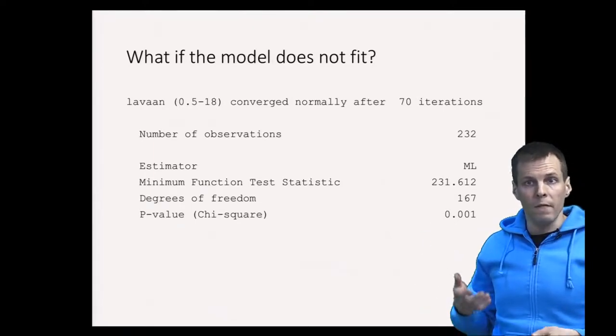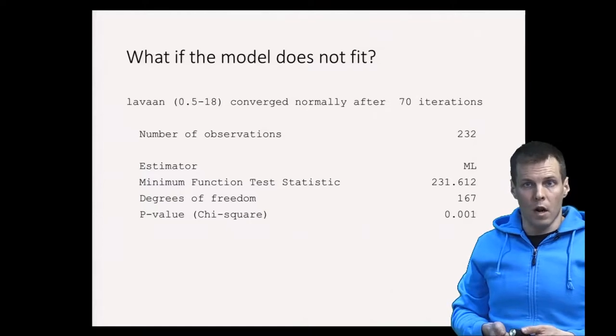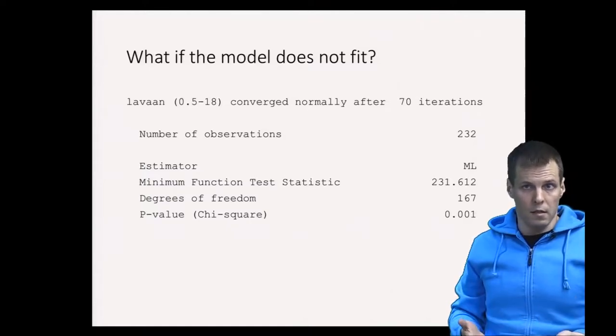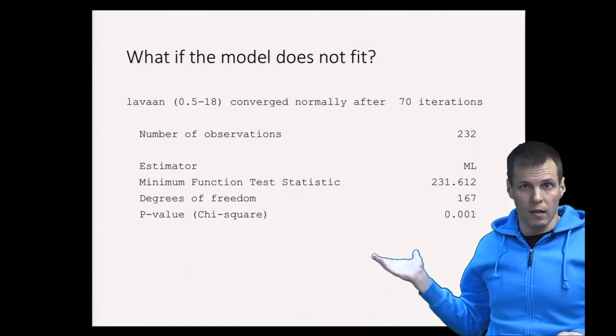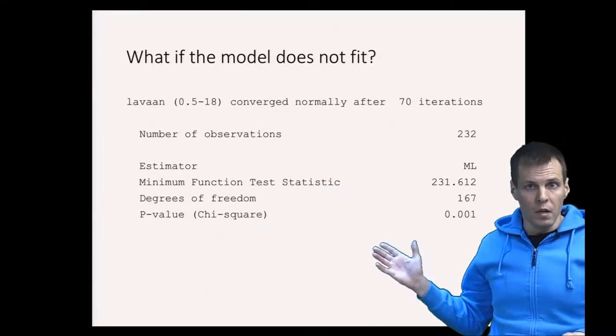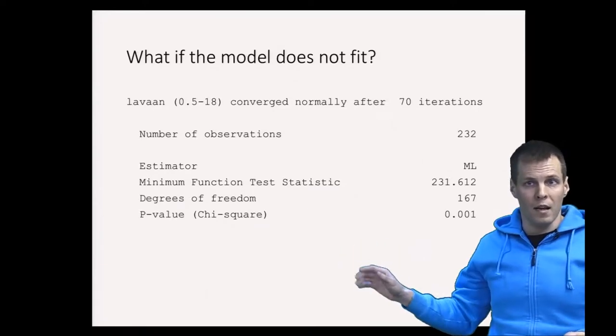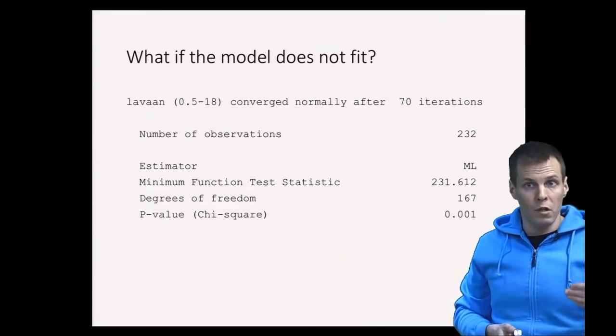So what do we do? It's actually very common that your chi-square statistic rejects the model, so you can't conclude that everything is well. You have to then understand why that occurs, so we have to do some diagnostics.